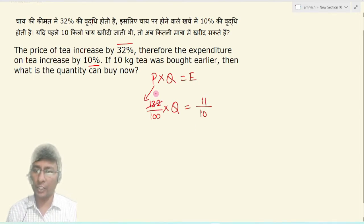100 divided by 33 and Q is divided by 25. 11 se ye 3, 5 se ye 2, aur 5 se ye 5, that implies Q ka value aayega 5 upon 6.